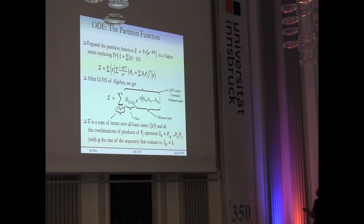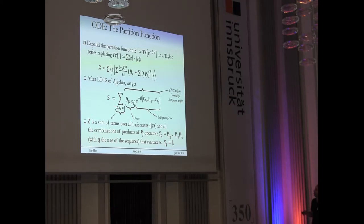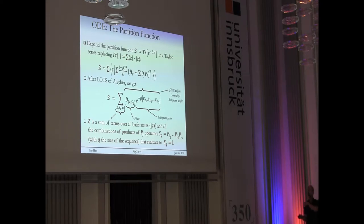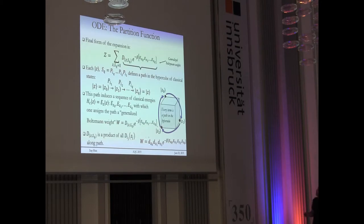When you plug this Hamiltonian into the partition function and replace the trace with a sum over computational basis states, after a few pages of algebra you end up with an expression that is a sum over all classical states and all sequences of permutation operators. For every sequence you get a term with a generalized Boltzmann factor, plus a number that comes from the diagonal operators — the prefactors of the permutation operators that generated those sequences.